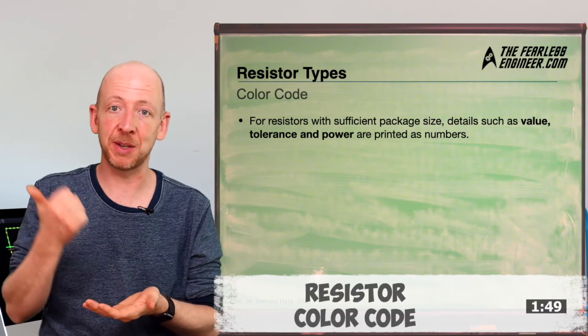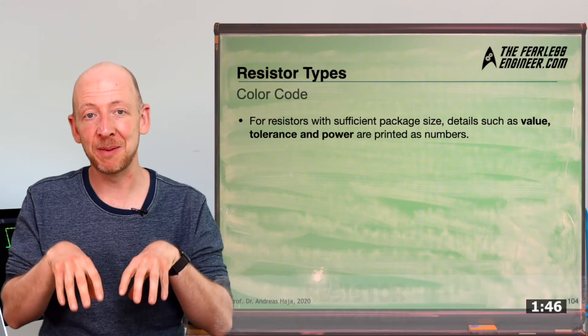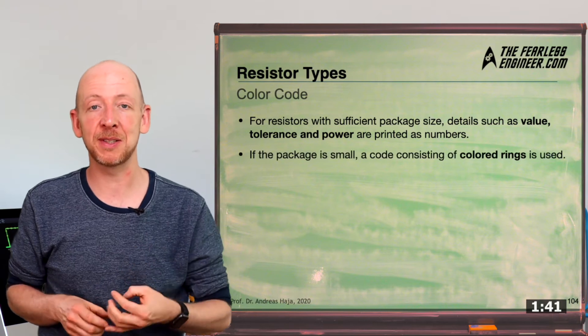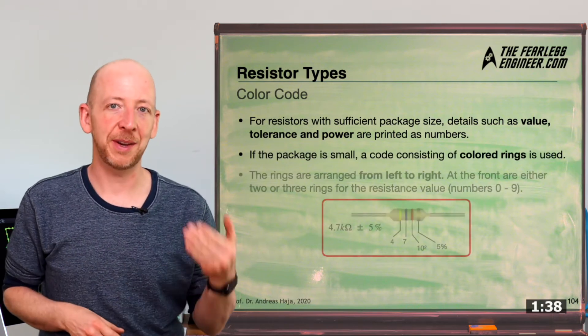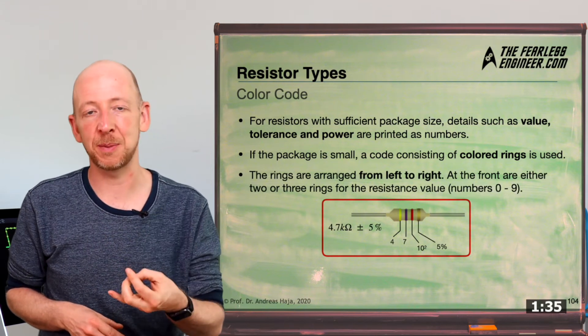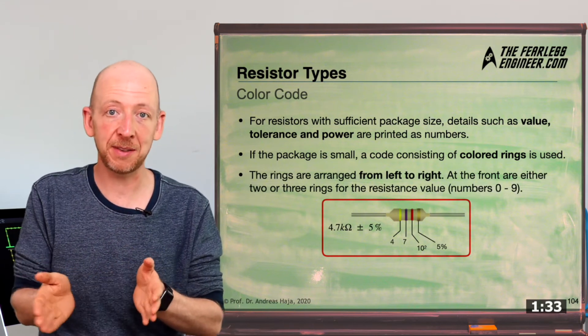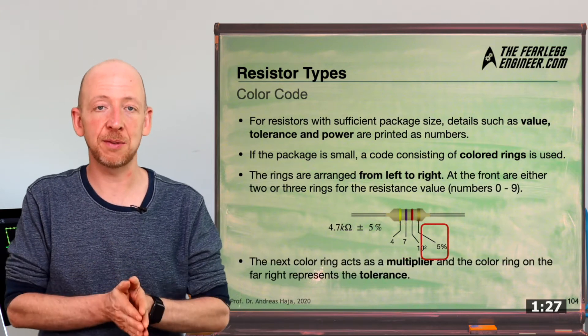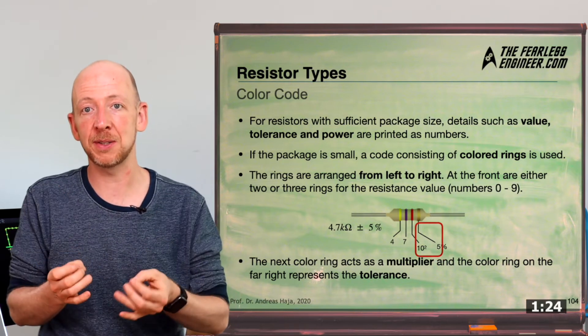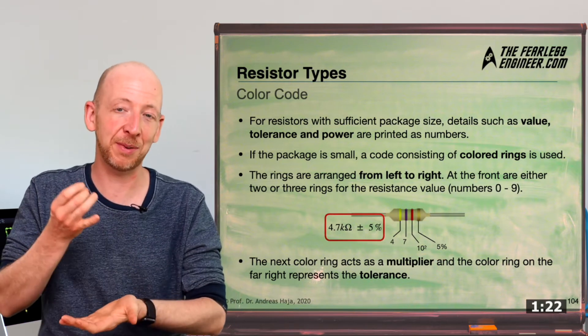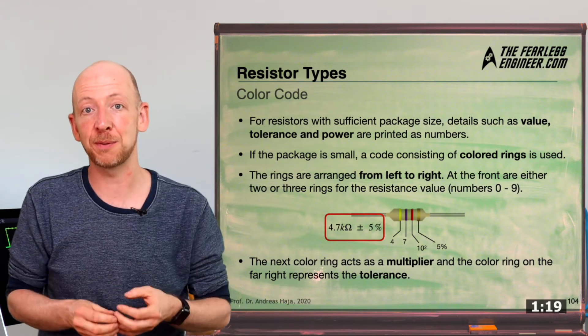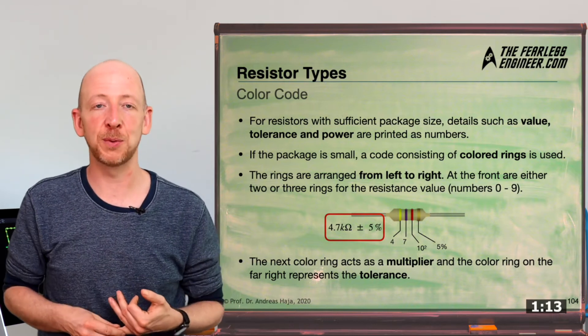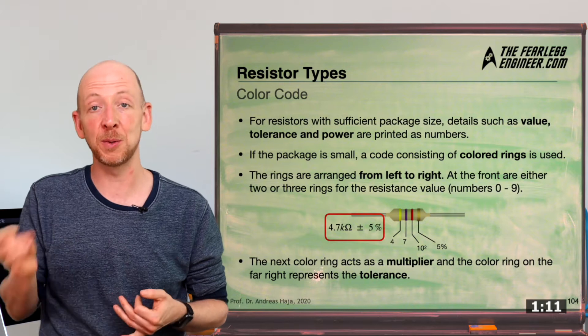Now, if the housing of a resistor is large enough, then its parameters, such as resistance value and tolerance, or its power rating, are printed directly onto it as numerical values. But in practice, the housing is most often too small to do this, and in such cases, a code of color rings is used instead. In the figure here, you can see that each ring stands for a certain piece of information. The rings are arranged left to right in the example, and the first three rings encode the resistance value in conjunction with the multiplier, and the last ring gives us the tolerance. And the resistor in the example here consists of the values 4 and 7 multiplied by 10 to the power of 2 at a tolerance rating of 5%. So the resistor you can see here lies in the range of 4.47 kilo-ohms up to 4.94 kilo-ohms, including the tolerance, of course.